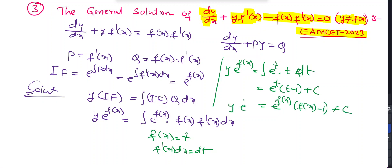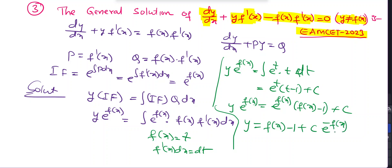Dividing both sides by e^(f(x)): y = f(x) - 1 + C·e^(-f(x)). This is the required answer.